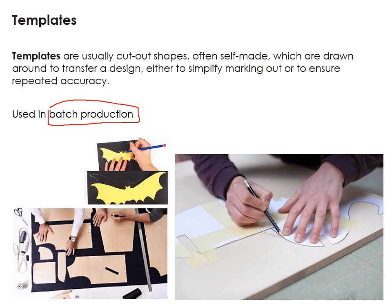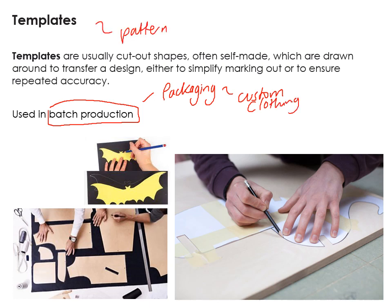For smaller runs of products — such as custom packaging or custom products — templates are very useful. In clothing, they're quite often called patterns, which has a slightly different meaning in product design. The templates used in textiles are patterns and are usually cut-out shapes. We use templates in product design too — for example, laser cutting something from card and tracing that onto a material to cut it out accurately.